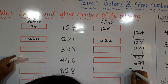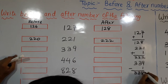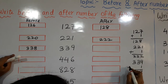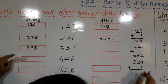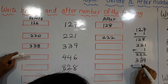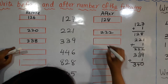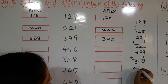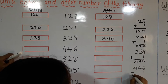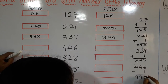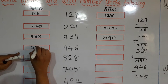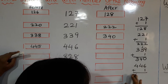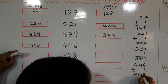Next, 339: before number, minus 1, that is 338. For the after number, we add 1 — 9 plus 1 is 10, carry 1, 3 plus 1 is 4, so the after number is 340. Next number, 446: minus 1 gives 445 for the before number, and adding 1 gives 447 for the after number.